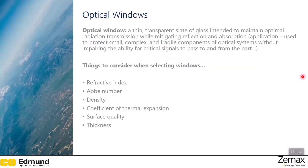Next we will talk about optical windows. Optical windows are thin transparent slates of glass intended to maintain optimal radiation transmission while mitigating reflection and absorption. Some applications include protecting small, complex, and fragile components of optical systems without impairing the ability for critical signals to pass. There are quite a few things to consider when selecting the appropriate window: the refractive index, the Abbe number, density, coefficient of thermal expansion, surface quality, and the thickness of your optical window.